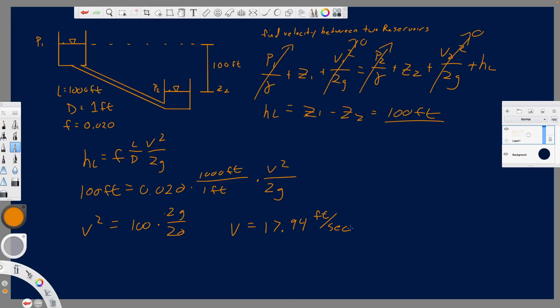If you wanted to calculate, or if you were asked to calculate the volumetric flow rate, of course Q equals the velocity times the area. That's a very simple step to get from there to there.